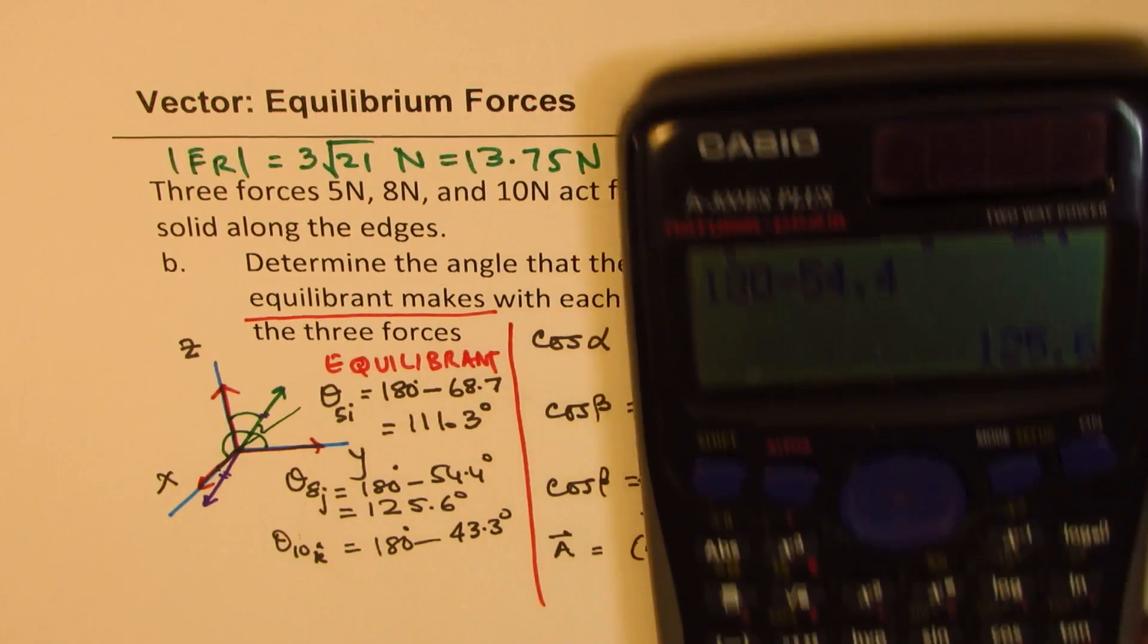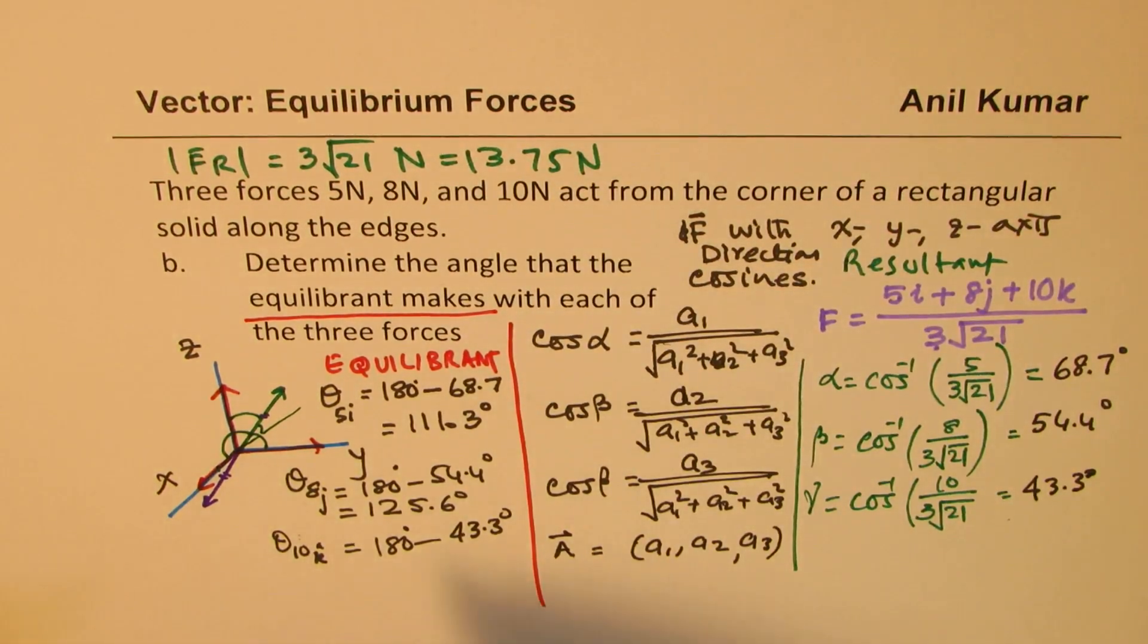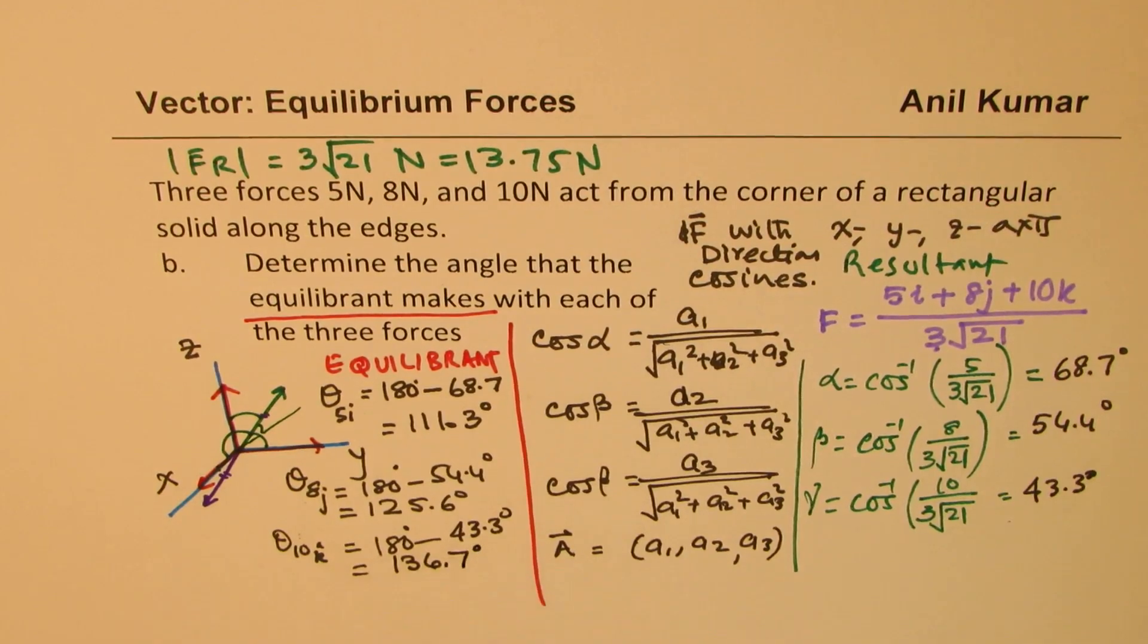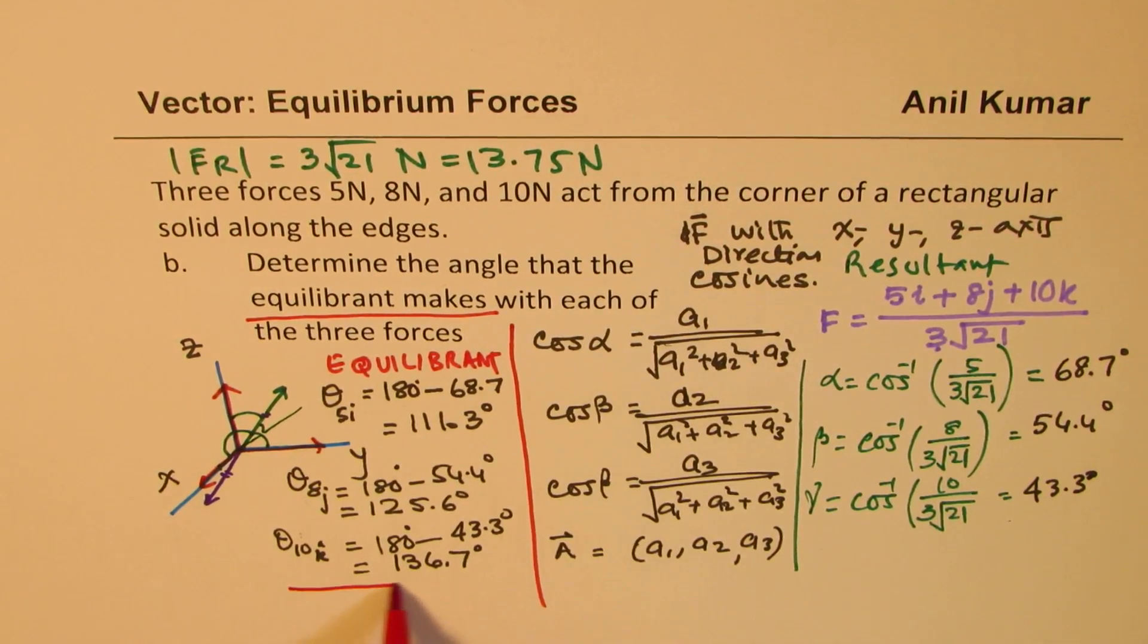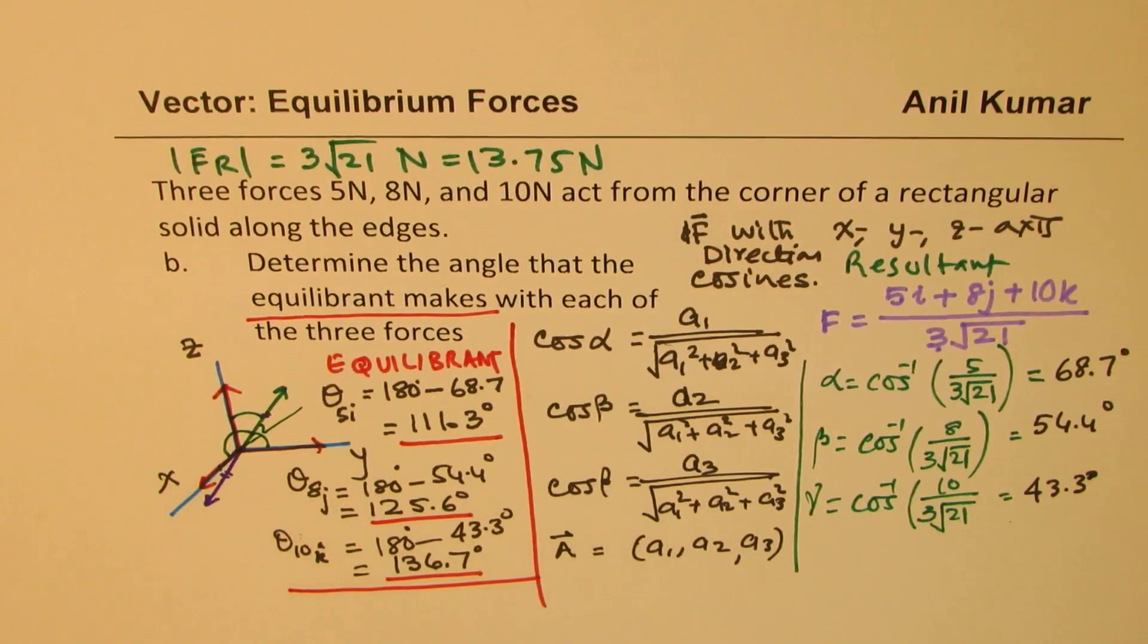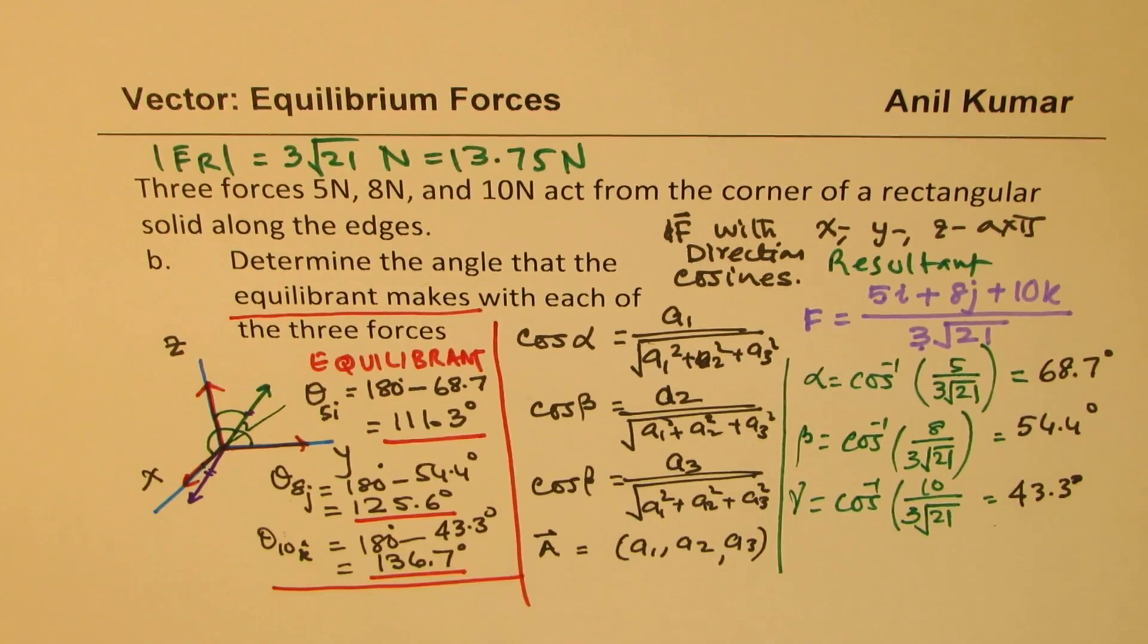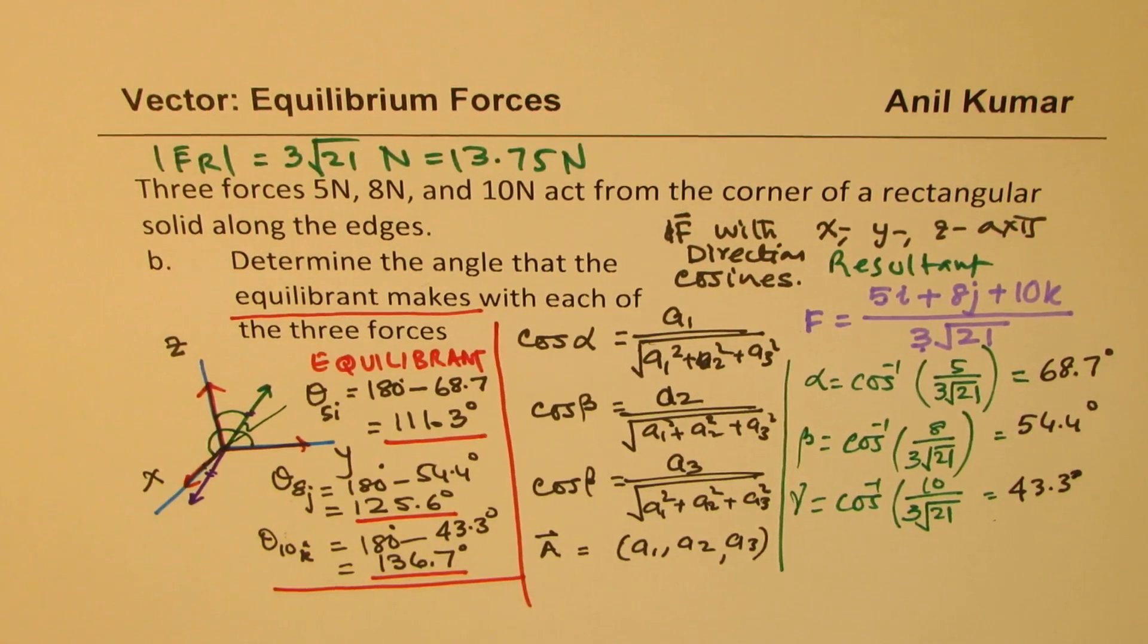And the third force which is for 10 in the k direction will be 180 degrees minus 43.3. So that is 180 minus 43.3, which equals 136.7. So these are our answers for the equilibrium. So the answers are 136.7, 125.6 and 111.3. Does it make sense to you? So that is how we are going to calculate this answer. So I hope all these steps are absolutely clear.